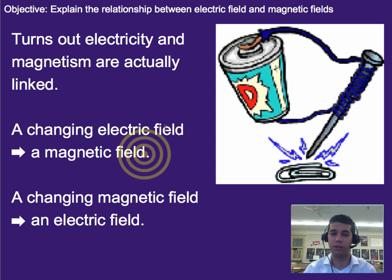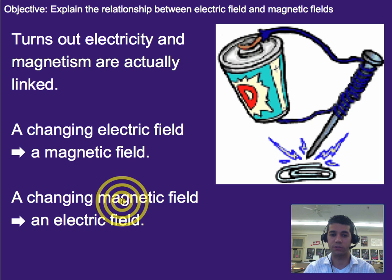So what that means is a changing electric field will actually create a magnetic field. So an electric field that changes in this kind of battery and wire here will actually magnetize this and create a magnetic field. And a changing magnetic field will actually create an electric field and this will actually be how power is produced normally.